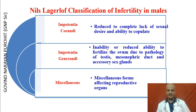Nils Lagerloff classified infertility in males under three subheadings: impotentia coendi, impotentia genandi, and the miscellaneous forms of infertility. Impotentia coendi refers to reduced to complete lack of sexual desire and ability to copulate in a male. Impotentia genandi refers to inability or reduced ability to fertilize the ovum due to pathologies of testes, mesonephric ducts, and accessory sex glands. There are also miscellaneous forms of infertility affecting the reproductive organs.